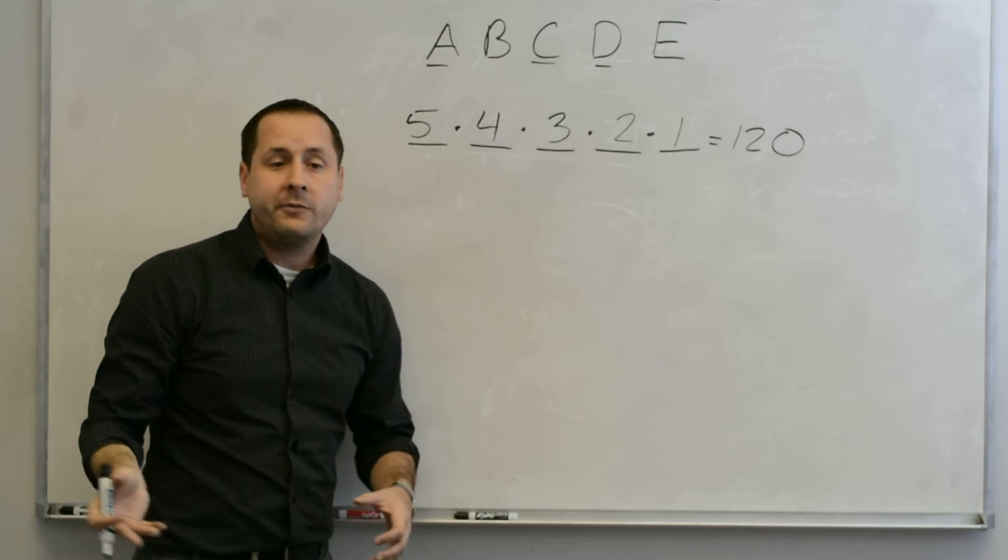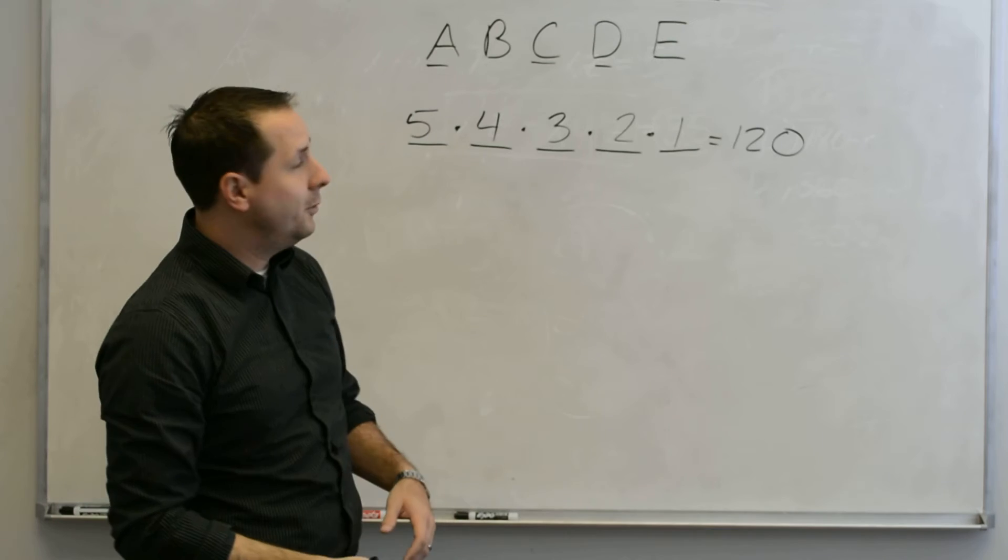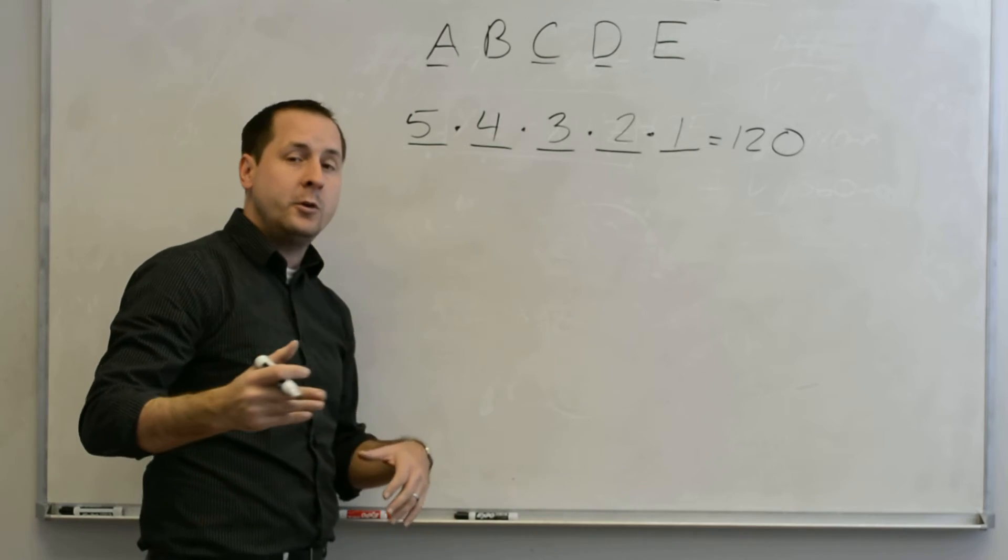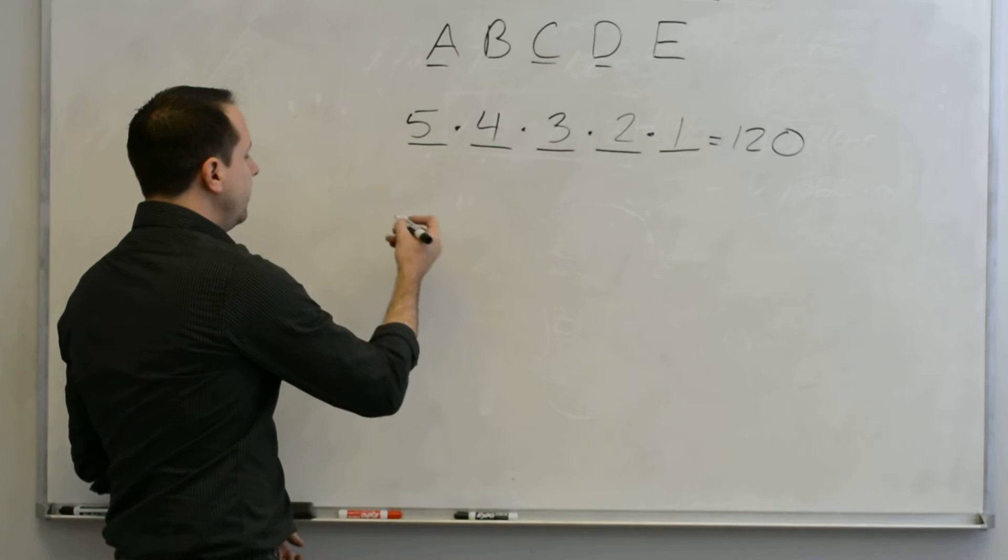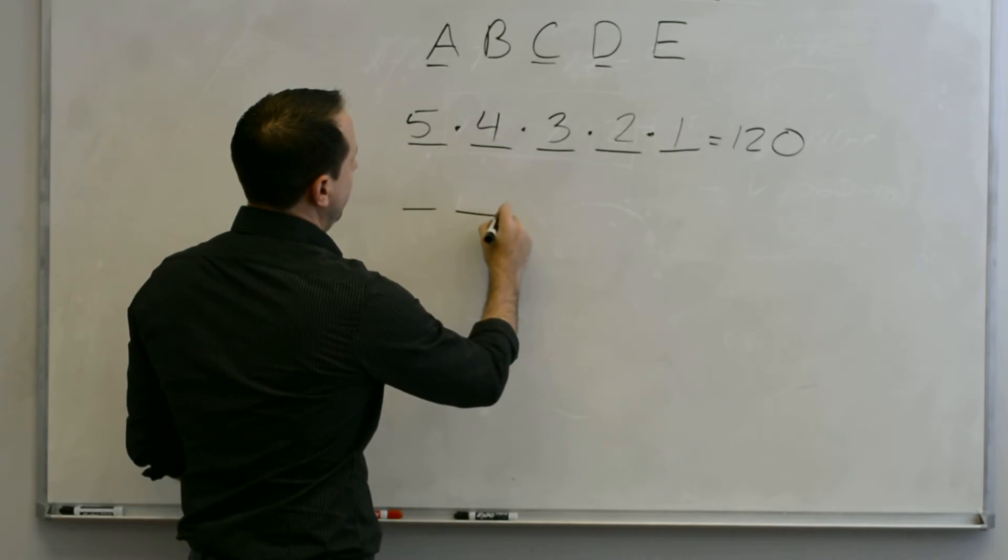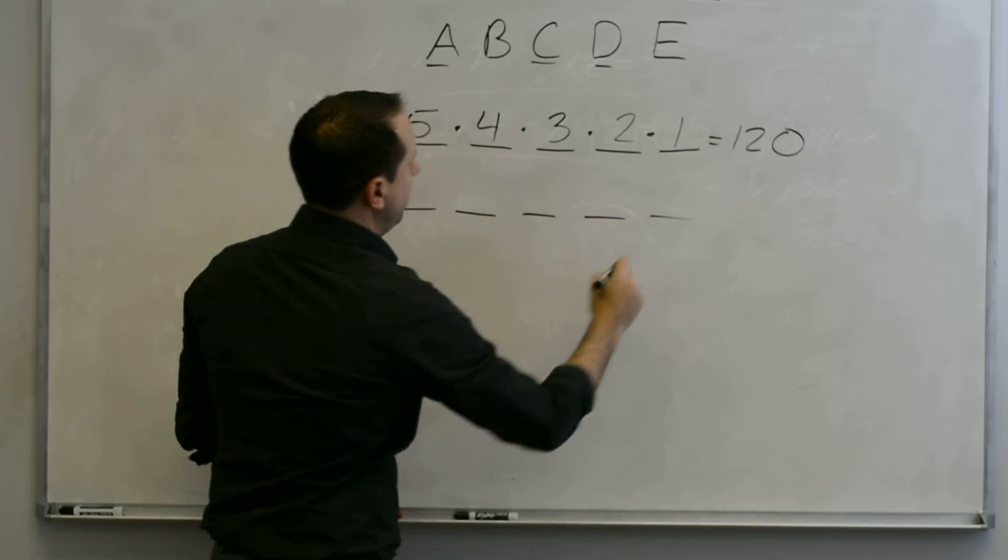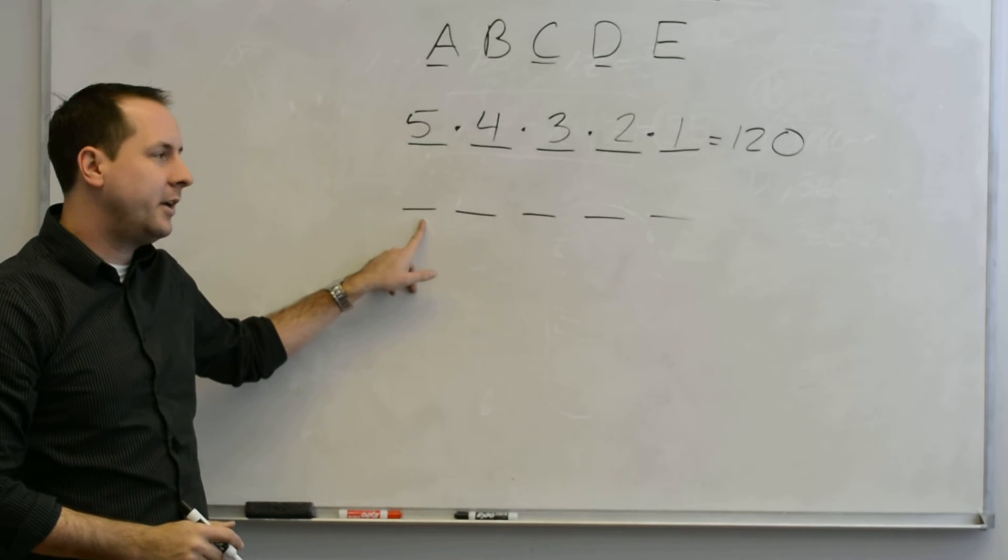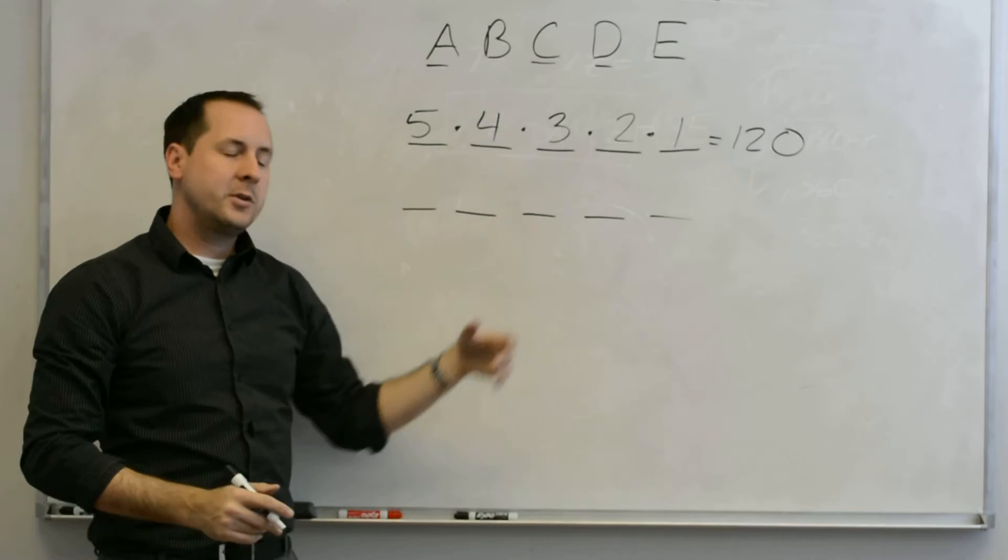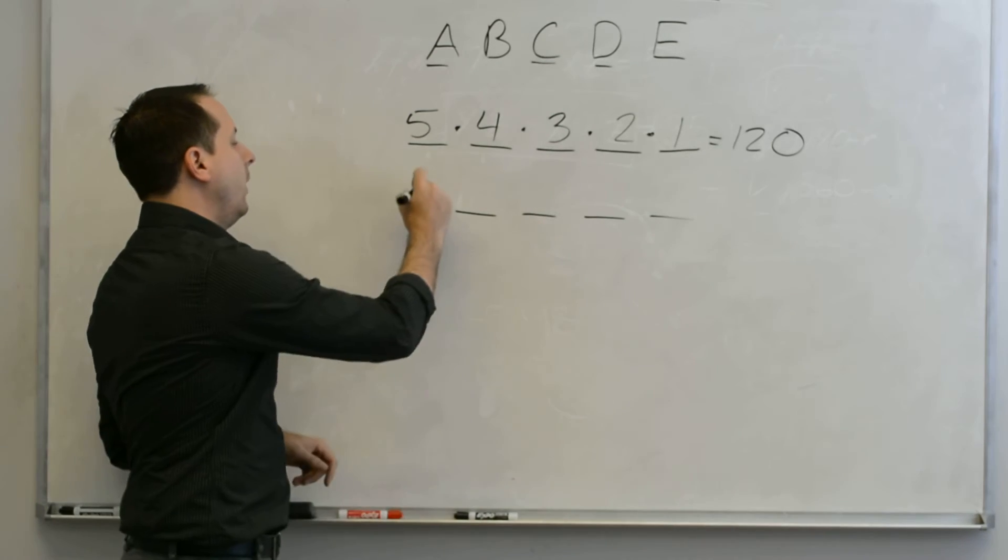This also works if things get a little bit more complicated. Maybe they give you an exception, and they say how many ways can you arrange this so the letter C would always come first. Well, I'm still arranging five letters, so I've got my five decisions to make. But for my first letter, it has to be C. So I don't really have a choice. I've only got one option.